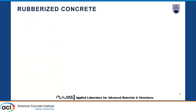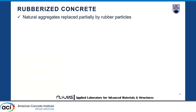What is rubberized concrete? As you all know, whenever natural aggregates in concrete are replaced partially by rubber particles, we call it rubberized concrete. Usually, fine aggregate is replaced with crumb rubber.